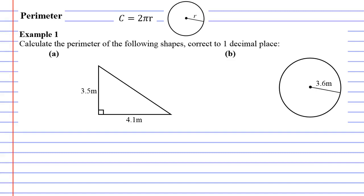Perimeter example one. Okay, so we've got two shapes here. We've got a triangle and we've got a circle.